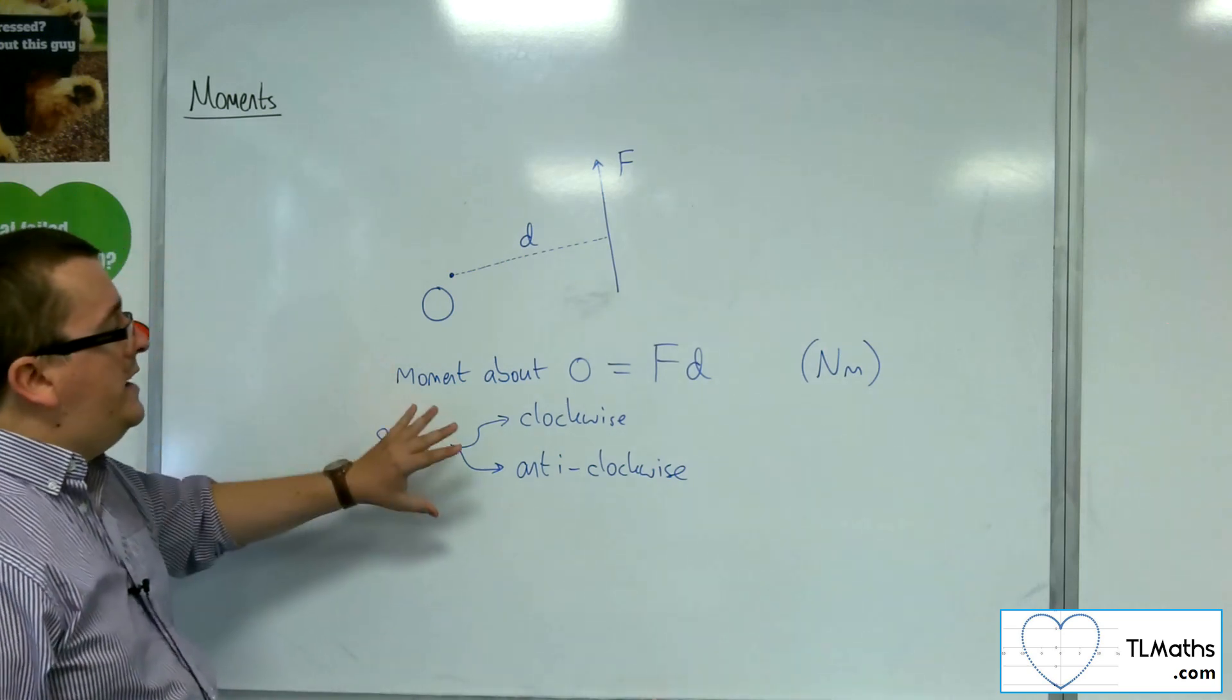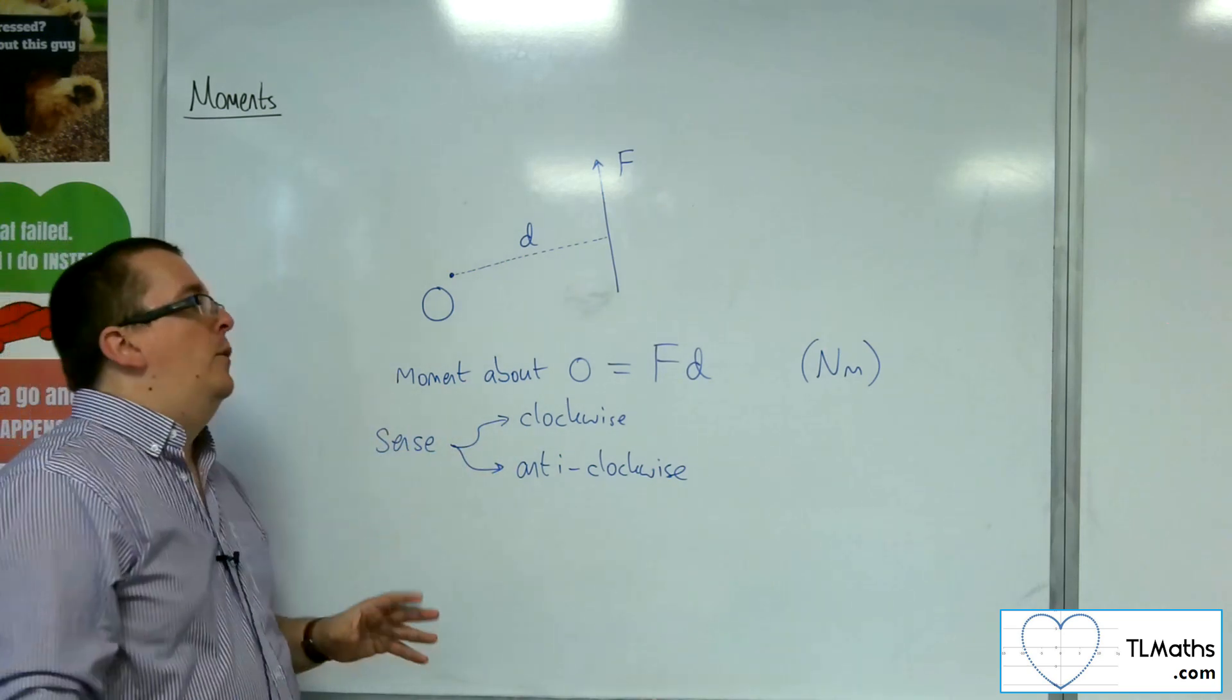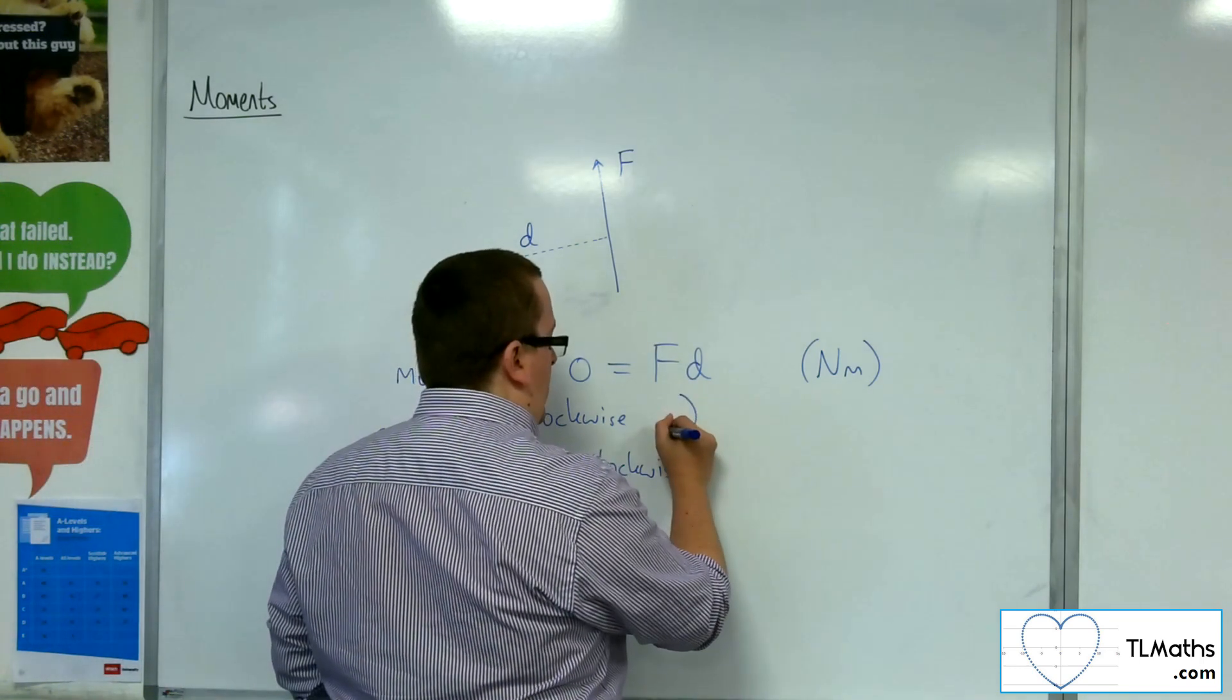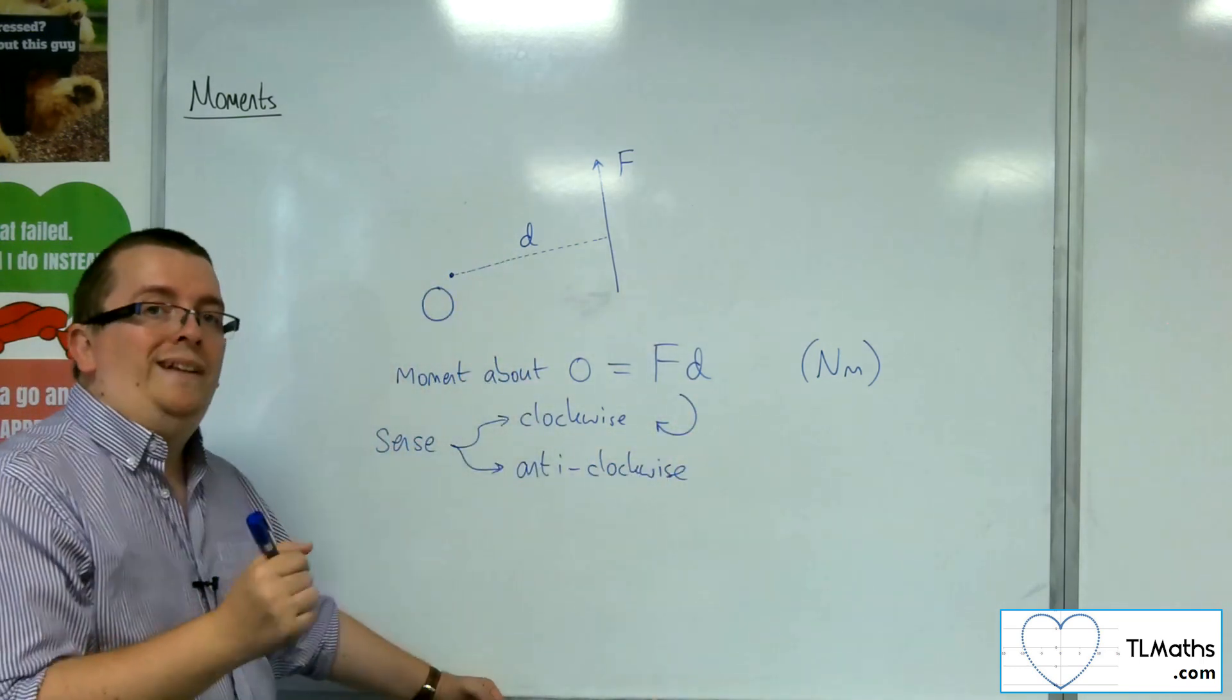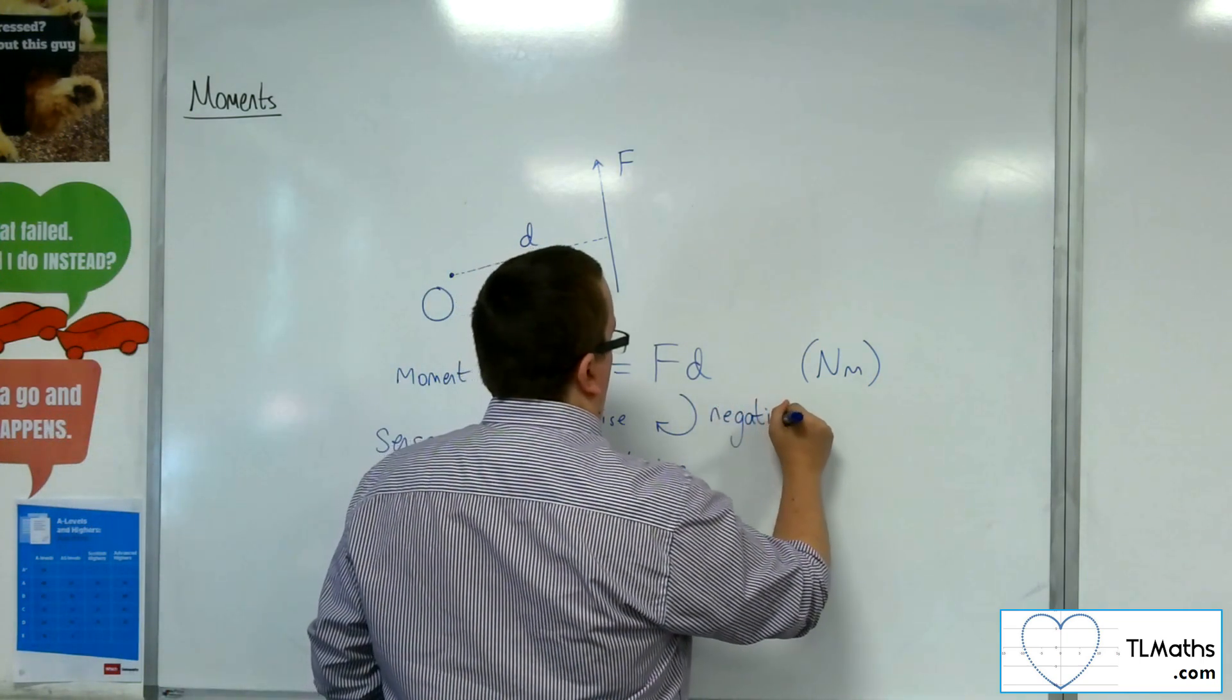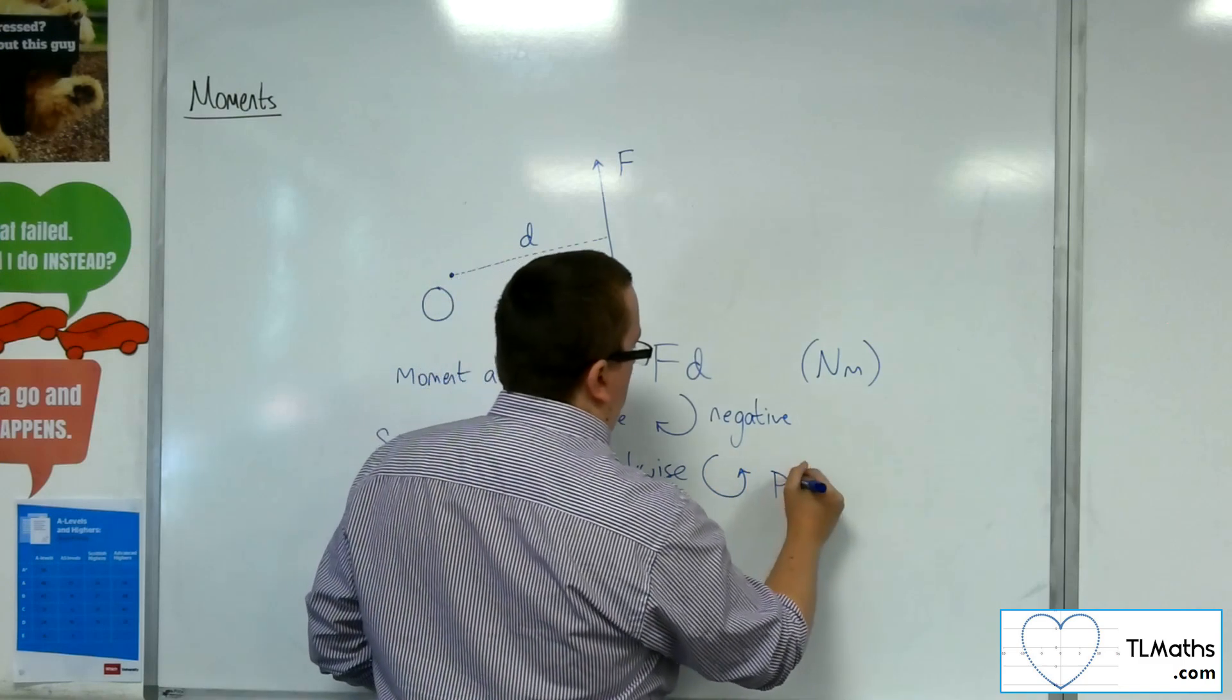So clockwise or anticlockwise, and we take one to be positive and one to be negative. Now, a clockwise motion, so going around in that direction, we take to be negative. Whereas an anticlockwise motion, we take to be positive.